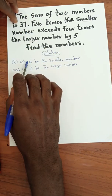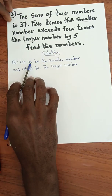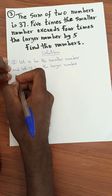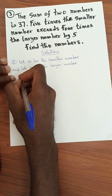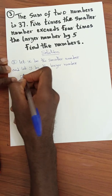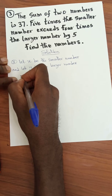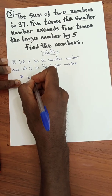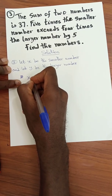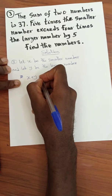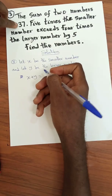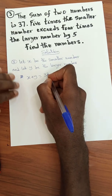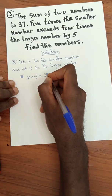The sum of x and y — the sum means addition — so x plus y is equal to 37. That's our first equation.